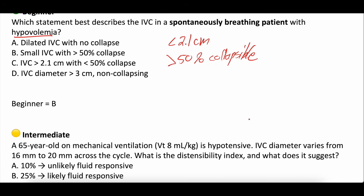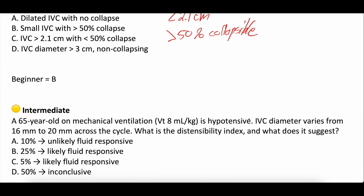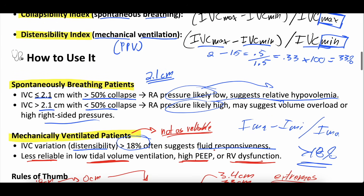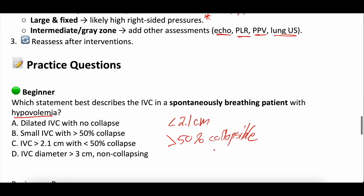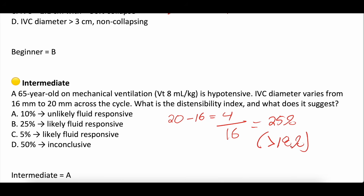Intermediate question: a 65-year-old on mechanical ventilation at 8 cc per kg is hypotensive. IVC diameter varies from 16 millimeters to 20 millimeters across the respiratory cycle. What is the distensibility index and what does it suggest? IVC max is 20, IVC min is 16 — so 20 minus 16 equals 4, divided by IVC min (16) equals 25%. Since 25% is greater than 18%, this suggests the patient is likely fluid responsive.